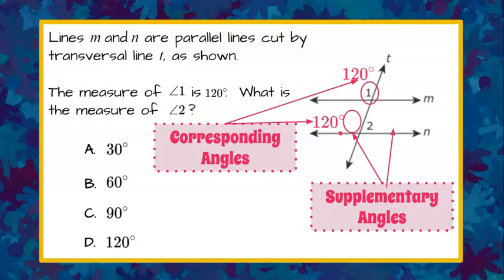So we know that if this angle is 120 degrees, then angle 2 has to be 60 degrees, because 120 plus 60 is 180. So our solution is answer B, 60 degrees.